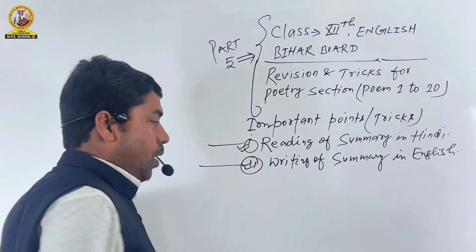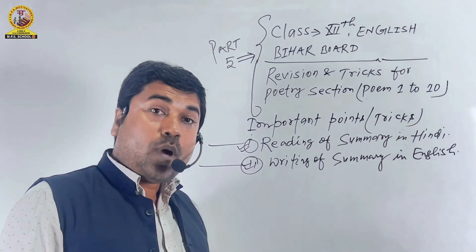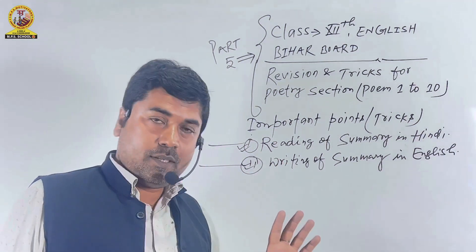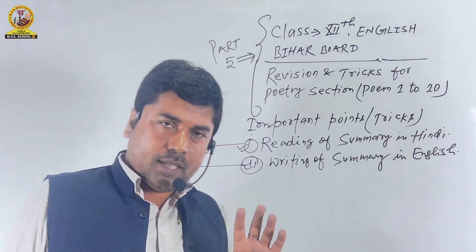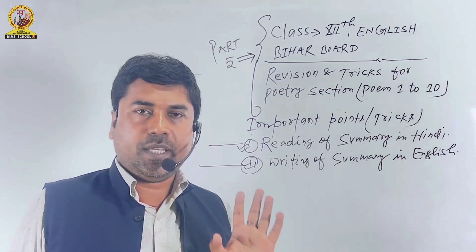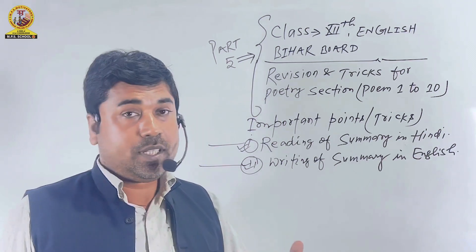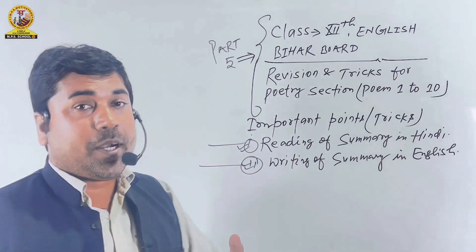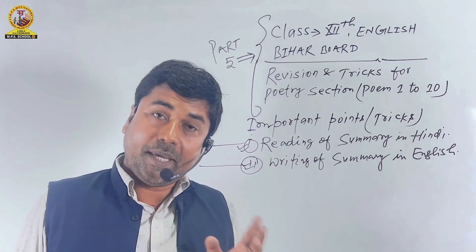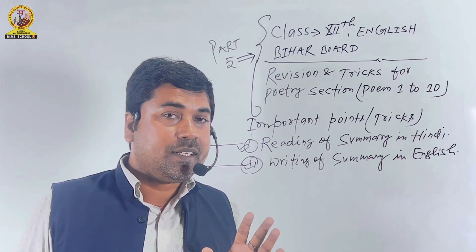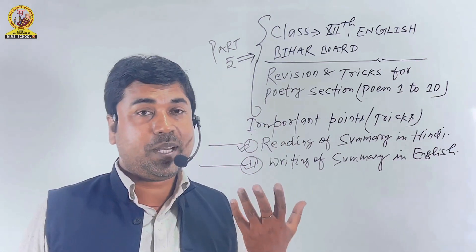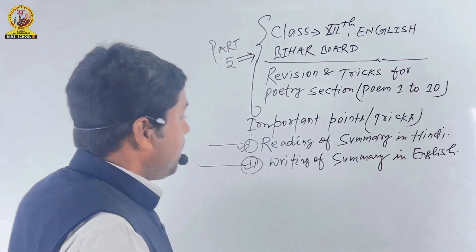This is point number 2: writing of summary in English. 10 kavitaon ke summary ko one by one aapko angrezi mein likhna hai. Aur theek usi tarah se jaise Hindi mein aapko 5 baar padhna hai, toh angrezi mein bhi aapko 5 baar kam se kam likhna hoga. Ek baar, do baar likhne se kaam nahi chalega — 4 baar, 5 baar, 6 baar, 10 baar likhna aur behtar hoga.